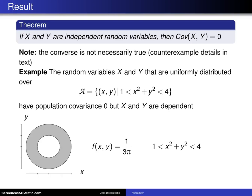Here's a second theorem involving covariances. If X and Y are independent random variables, then the covariance of X and Y equals 0.